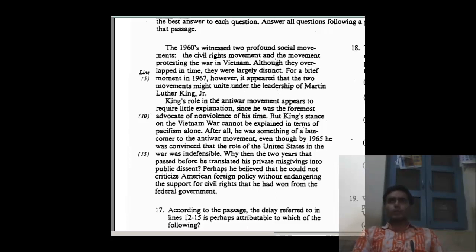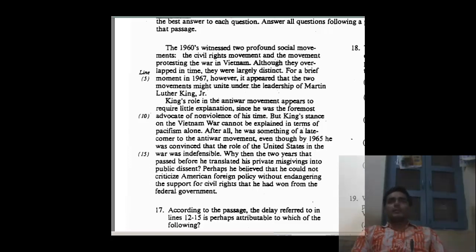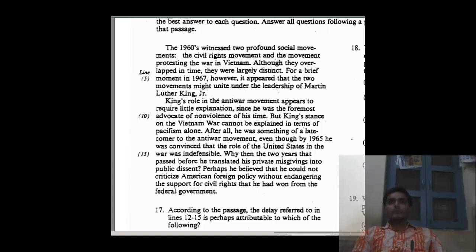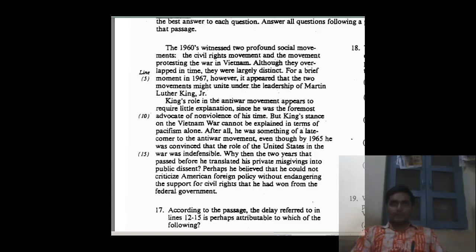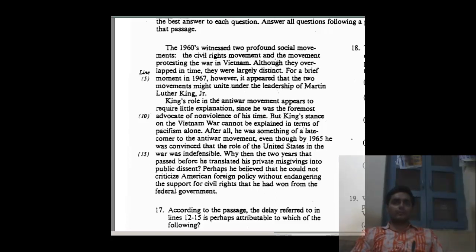"Although" is a trigger — although they overlapped in time, they were largely distinct. "Although" signals that they happened at the same time but remained separate. For a brief moment in 1961, however, it appeared they might unite under the leadership of Martin Luther King Jr. Martin Luther King Jr. is another very important character in US history. "However" is another trigger. These triggers, commas, and a little background knowledge make life very simple.